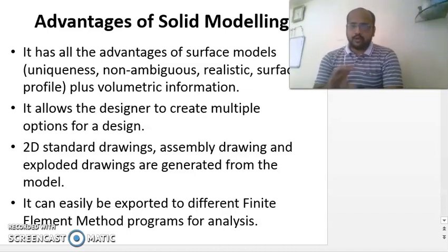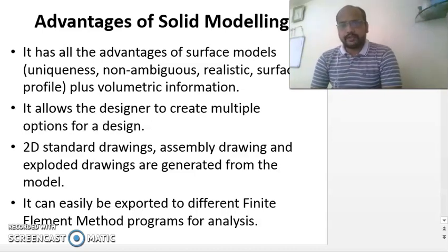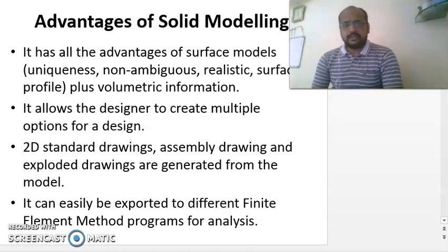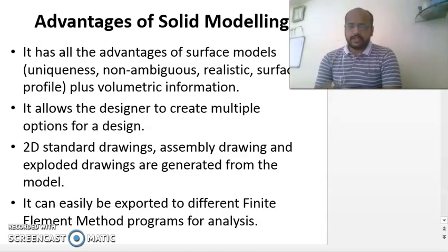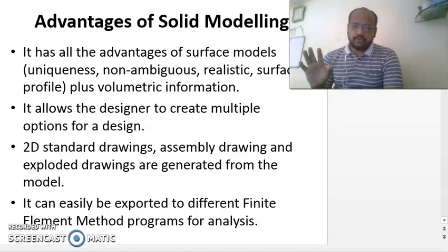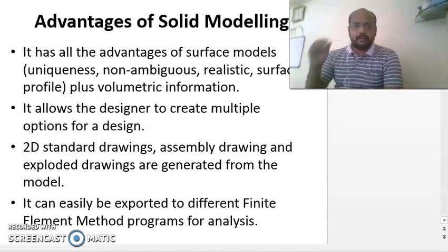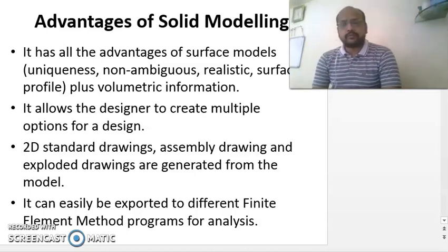For example, if you have drawn an assembly of different components in CATIA software in part modeling, you can easily find out its volume and its center of gravity. These things are easier to find in solid modeling. But in surface modeling, it just represents a surface — it does not give the value of the volume of that object. So this is not applicable to surface modeling. It also allows the designer to create multiple design options, and editing of the solid model is very easy.